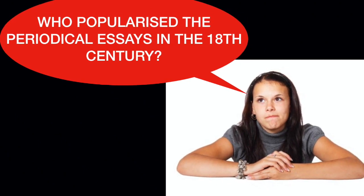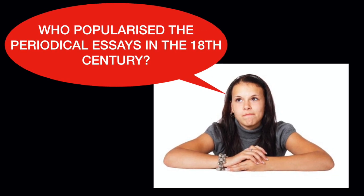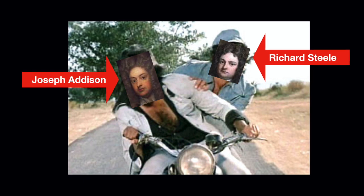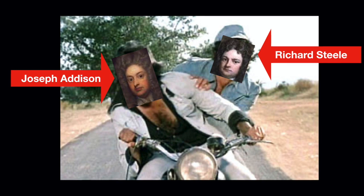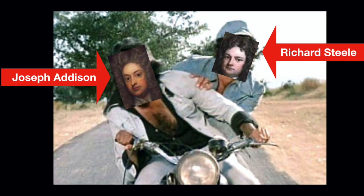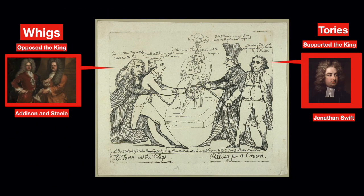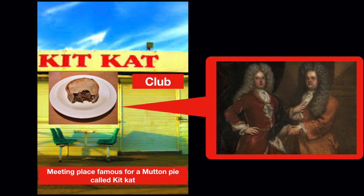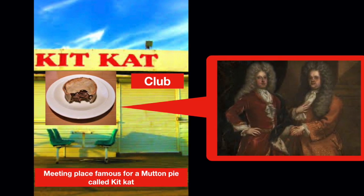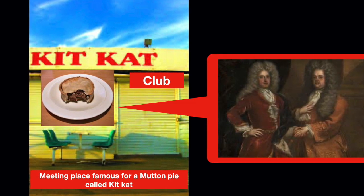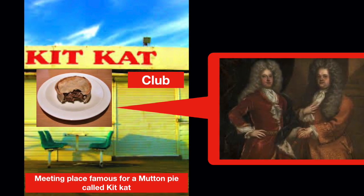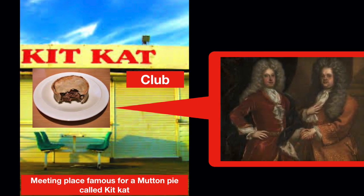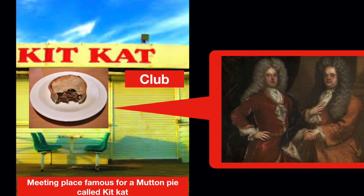Who were the people who really popularized the periodical essays in the 18th century? This was a joint endeavor of two friends, Joseph Addison and Richard Steele. What is interesting about their friendship is that both shared the same ideological beliefs — both were members of the political party Whigs, which was going against the principles of the king of the time. They also had similar literary taste, as both were members of the Kit-Kat Club, a popular literary club where individuals would sit, eat and discuss common ideological beliefs. Interestingly, the club's name was derived not from a chocolate, but from a mutton pie.